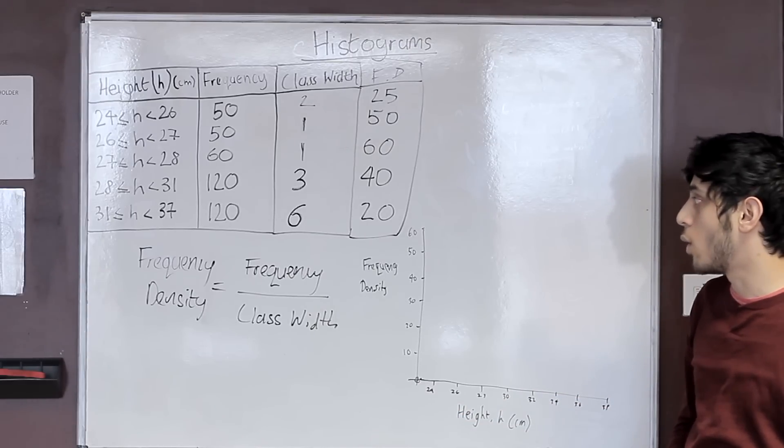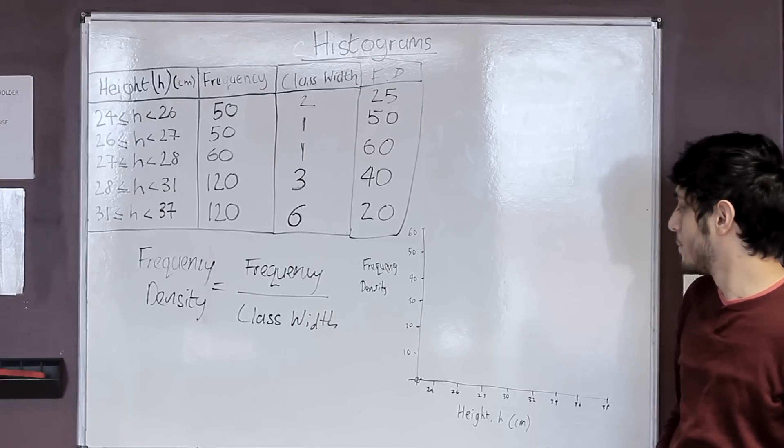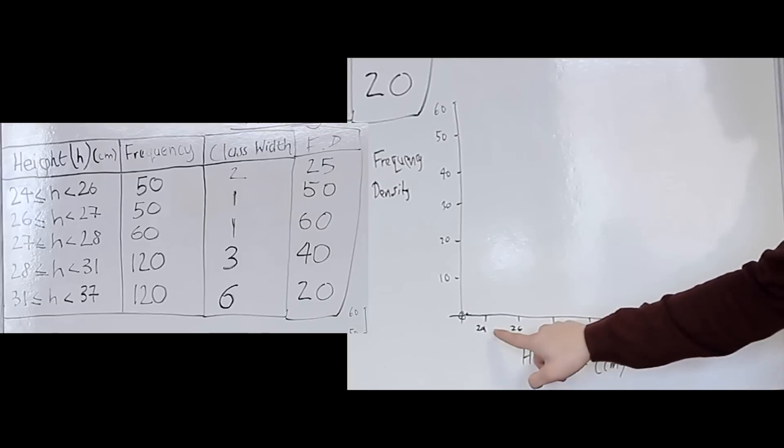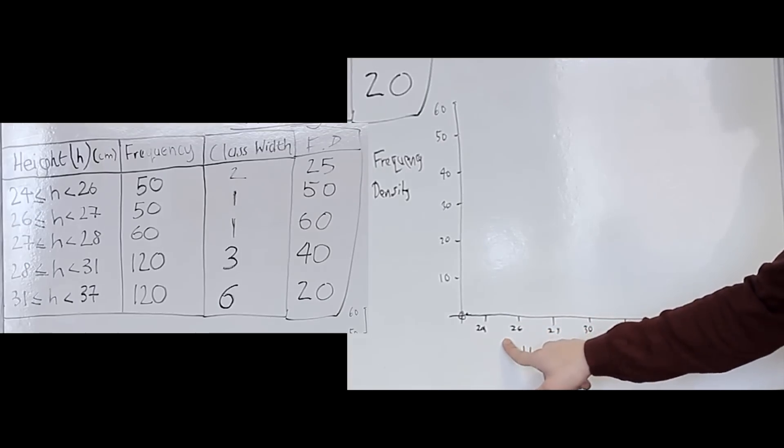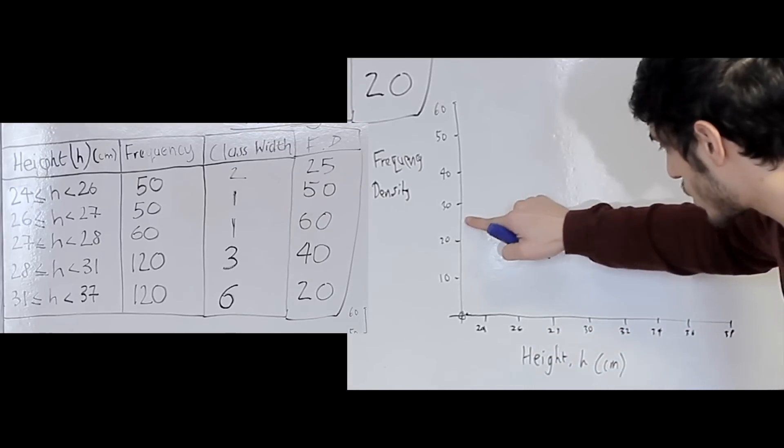So now that we know our x values and y values we just need to start plotting them. Our x axis is 24 to 26, so it will go from 24 to 26, and our frequency density is 25, so our bar will go all the way up to 25 which is just roughly here.